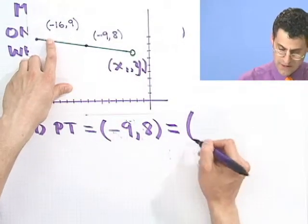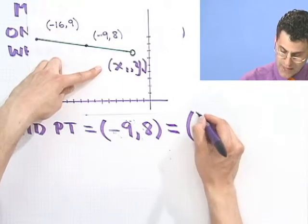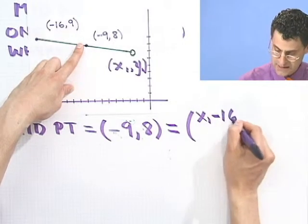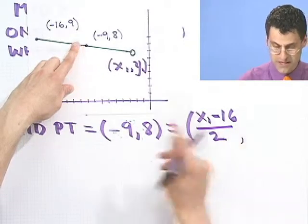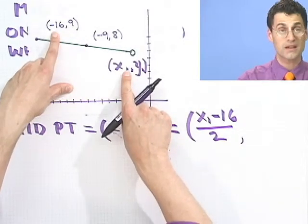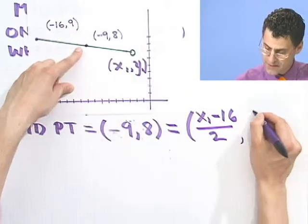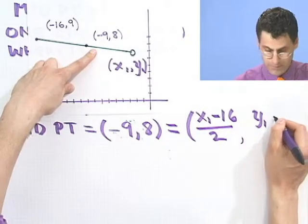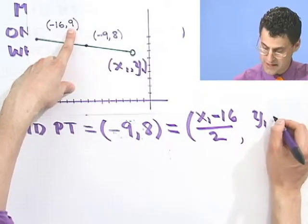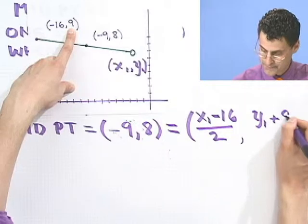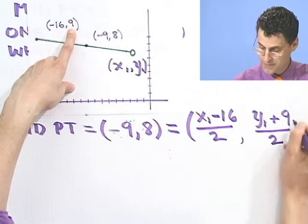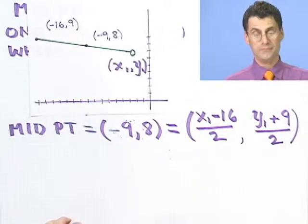Well, the average of the x values would be what? It would be x1 minus 16 divided by 2. I just added up the two x values, x1 and minus 16 divided by 2. And the y values, y1, and then we have a plus 9 divided by 2.